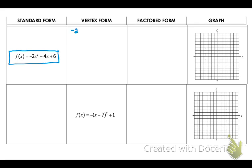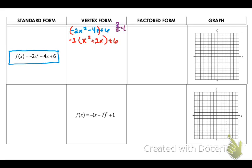I'm going to go ahead and rewrite this as negative 2x squared minus 4x plus 6. Remember, this is where you look at the first two terms and ask yourself, is there anything you can factor out that is not going to take away that x squared? You can actually factor out a negative 2 — you have to take out that negative part, you cannot leave it in there. So x squared plus 2x, and your b is now 2, so you take half of 2 and then square it.